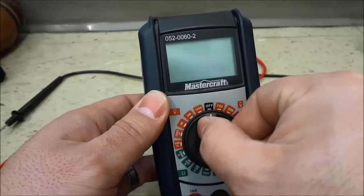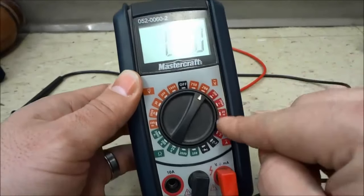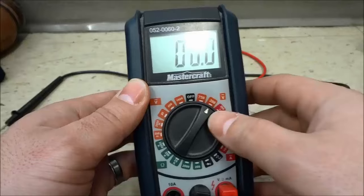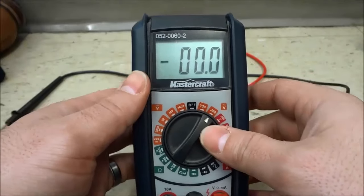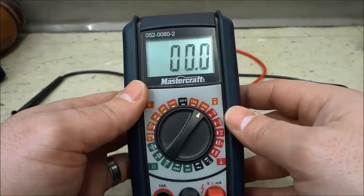If you go to the top right section over here, this section is for the AC volts, the alternating current volts.